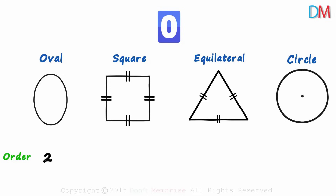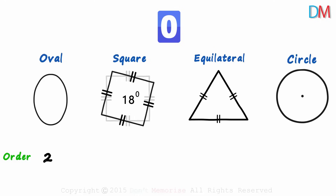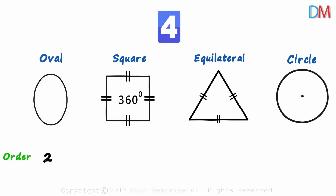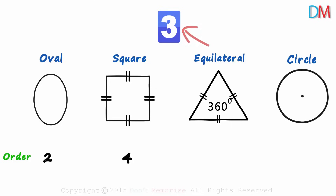In a similar way, let's find the order of rotational symmetry for the remaining three shapes. Let's start rotating the square about its center point: at 90 degrees, 180 degrees, 270 degrees, and 360 degrees. Clearly, the order of rotational symmetry for a square is 4. Now for the equilateral triangle: at 120 degrees, at 240 degrees, and at 360 degrees — three times in one complete rotation. The order is 3.